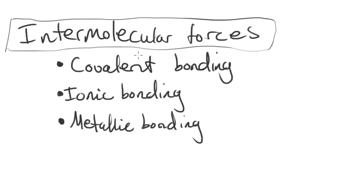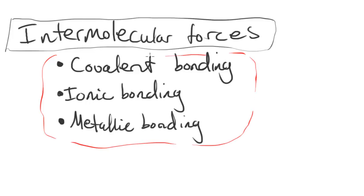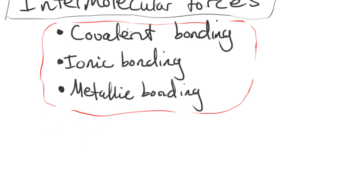So these forces — covalent bonding, ionic bonding, metallic bonding — these forces tended to be forces which were inside a particular molecule, between the atoms in those molecules. Ionic bonding was forces between ions, and metallic bonding is forces between ions and electrons.